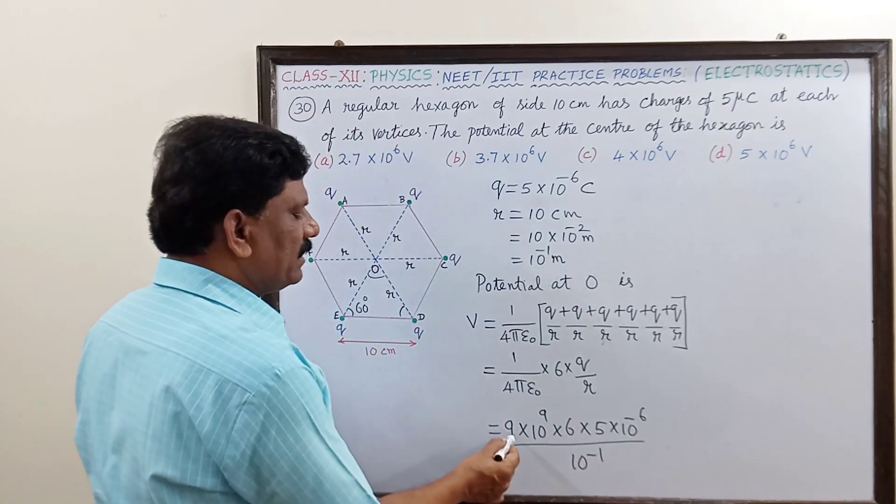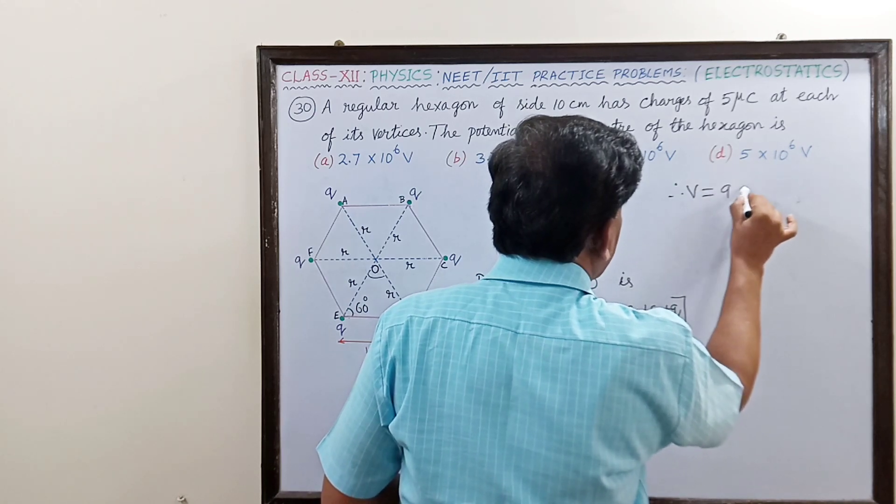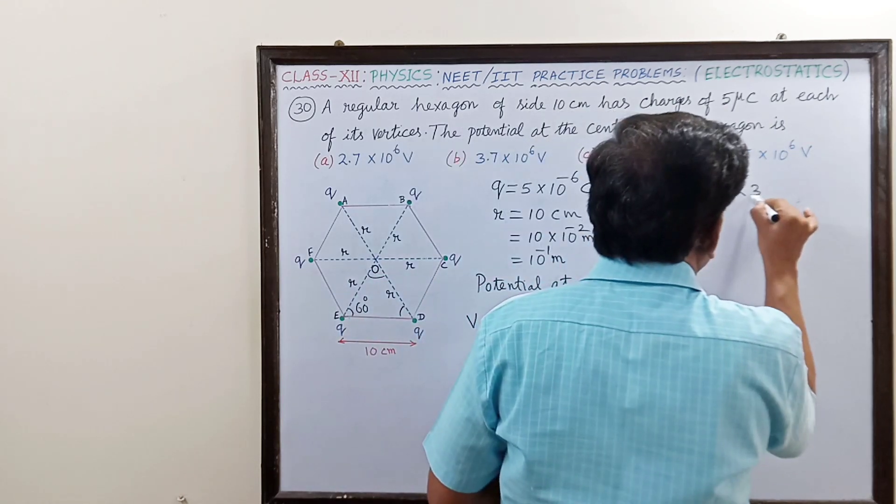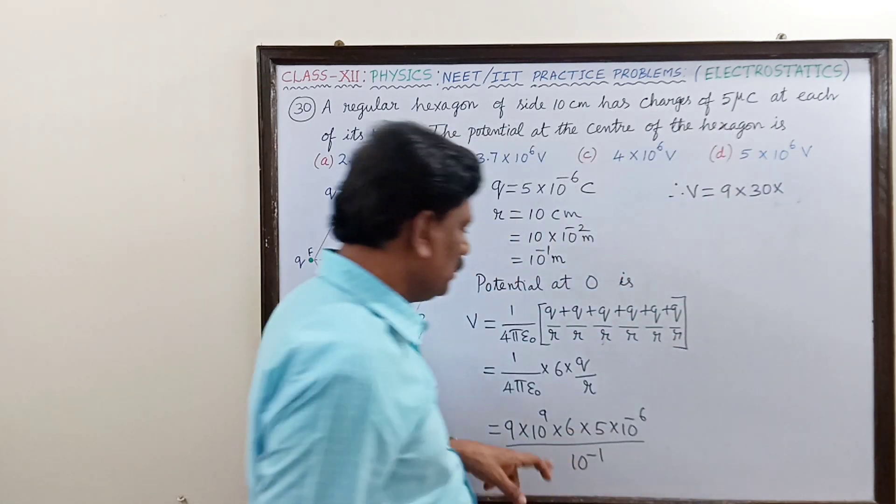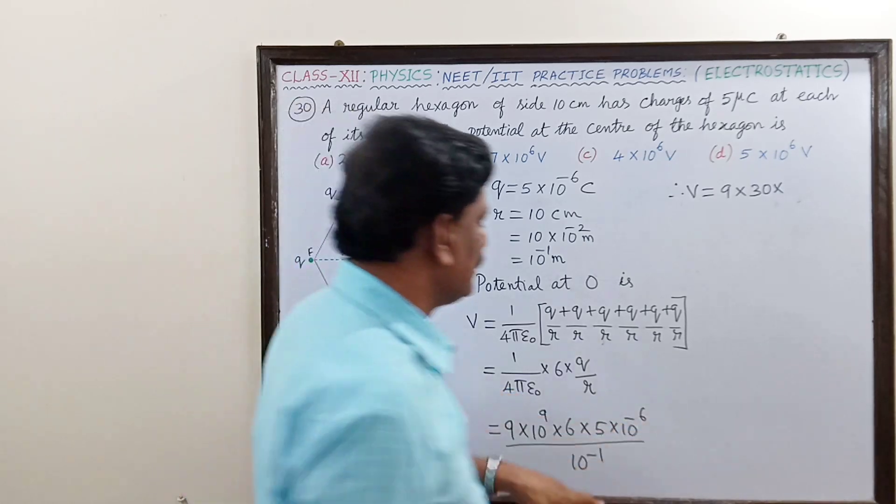So therefore V is now equal to 9 multiplied by 6 into 5 is 30. So this is 30.